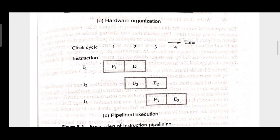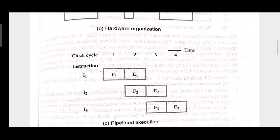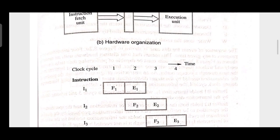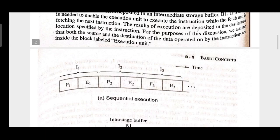So what is pipeline execution? At clock cycle number 4, the entire 3-instruction executions are completed, as per this diagram. For sequential execution in diagram 1, count the blocks — each block is either a fetch phase or execution phase, and each phase needs one clock cycle. Counting all blocks, there are 6, so 6 clock cycles are required for sequential execution of 3 instructions.